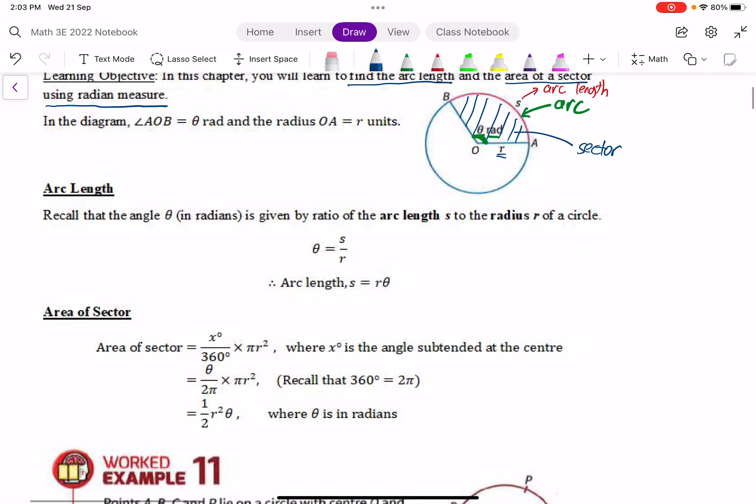For the arc length, recall that the angle theta in radians is given by the ratio of the arc length to the radius of the circle. So we have theta equals arc length S divided by radius R. To find arc length S, we simply cross multiply the R, so you get S equals R theta. This is the new formula: arc length equals R times theta.